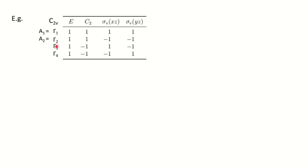For the third irreducible representation: one-dimensional, principal axis C2 is minus one, so the symbol is B; vertical plane is plus one, so it is B1. For the fourth: principal axis is minus one so it is B, and vertical plane is also minus one, so it is B2. So we have found all four Mulliken symbols — A1, A2, B1, B2 — for the four irreducible representations of the C2v point group.